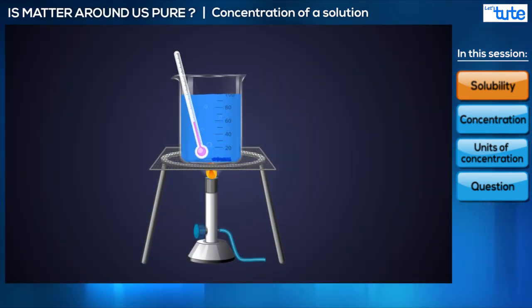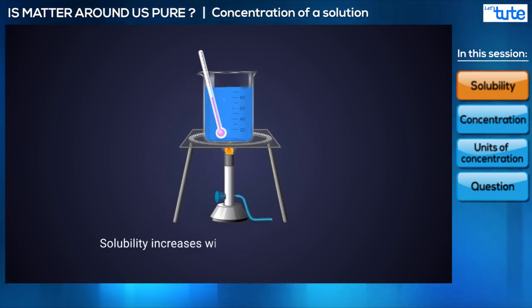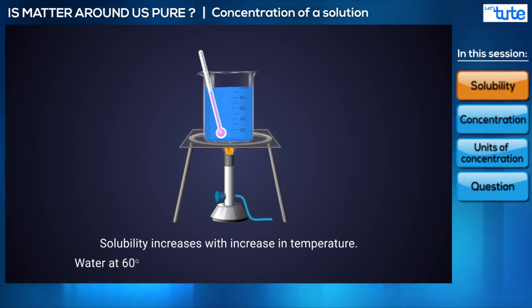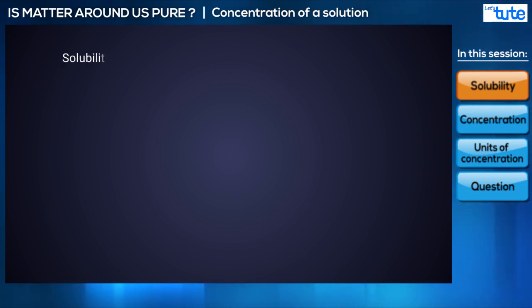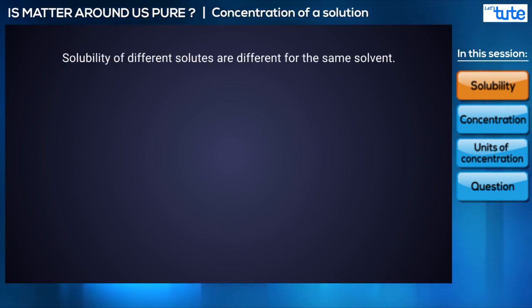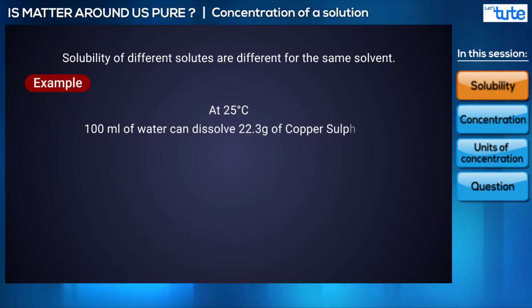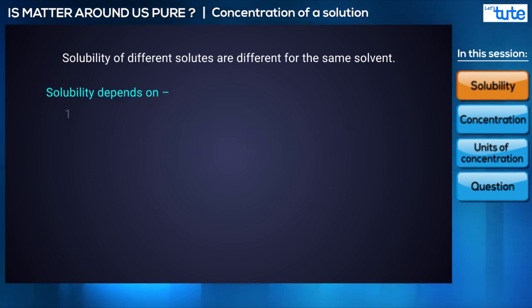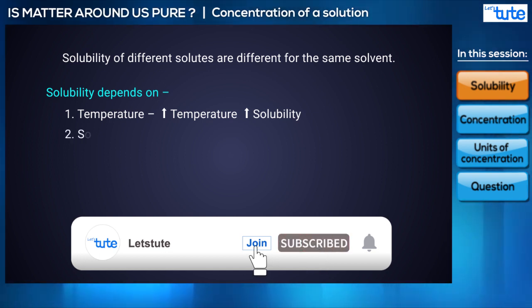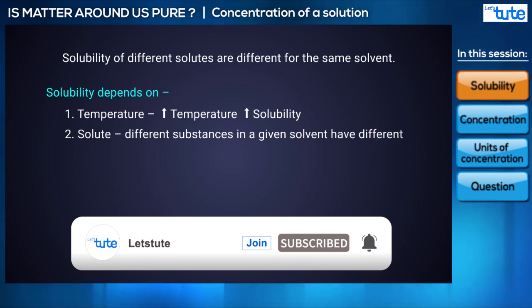Now let us heat the solution in beaker C. We will see that when the temperature rises, the undissolved salt starts dissolving, meaning solubility increases with increase in temperature. So water at 60°C will dissolve more solute than water at 25°C. Another important point is that solubility of different solutes is different for the same solvent. For example, at 25°C, 100 ml of water can dissolve 22.3 grams of copper sulphate, while at the same temperature it can dissolve 35.7 grams of sodium chloride. Hence, solubility depends on: (1) temperature — higher temperature means more solubility — and (2) the nature of the solute.